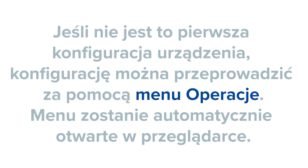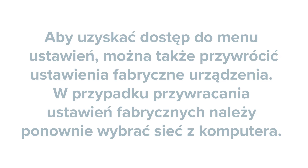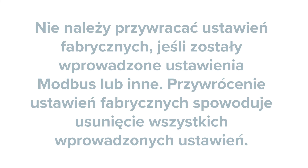If this is not your first setup of a unit, the setup is complete through the operations menu. The menu will open automatically in the browser. You can also restore the factory settings of the unit in order to access the setup menu. If you restore factory settings, reselect the network from the computer. Do not restore factory settings if Modbus or other settings have been made. Restoring factory settings will delete all settings that have been made.